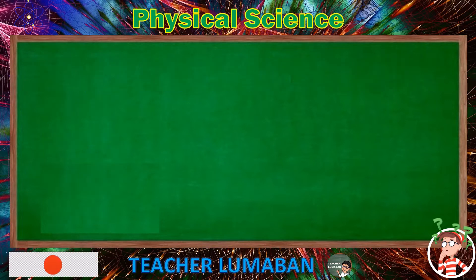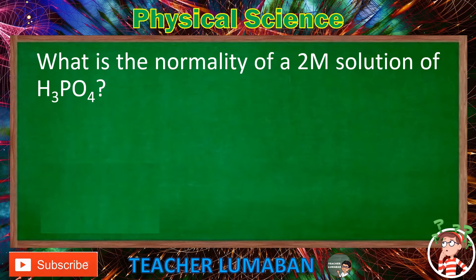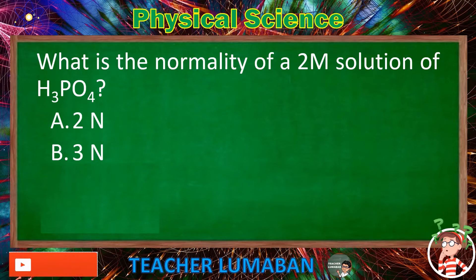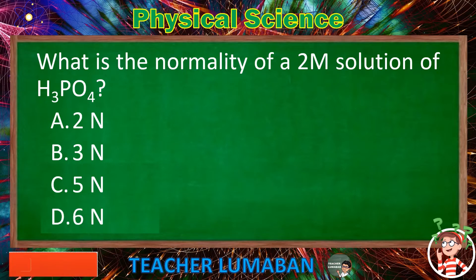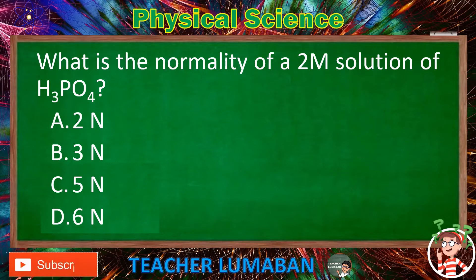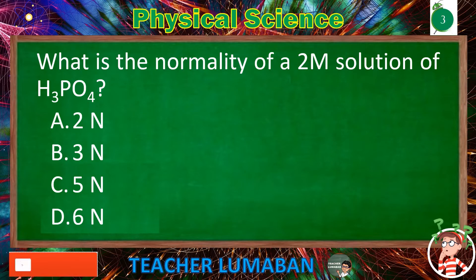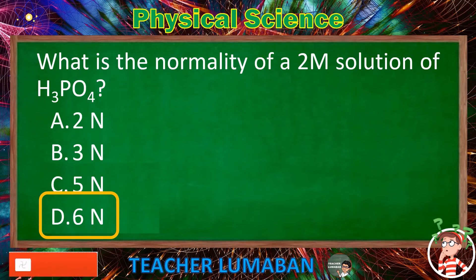What is the normality of a 2M solution of H3PO4? Letter A: 2 N. Letter B: 3 N. Letter C: 5 N. Letter D: 6 N. The correct answer is Letter D, 6 N. The normality of a 2M solution of H3PO4 is 6 N.